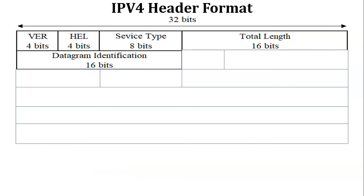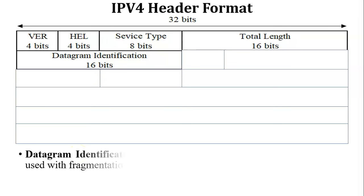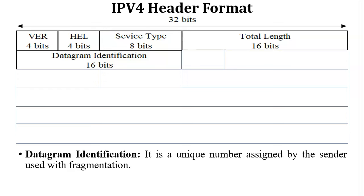The next field is Datagram Identification, which contains 16 bits of data. The sender assigns a unique number to each datagram, and this unique number is used for the fragmentation process. Fragmentation is required when the length of a packet is too large — at that time the packet is divided into fragments and sent into the network. The unique number assigned by the Datagram Identification field helps manage these fragments.